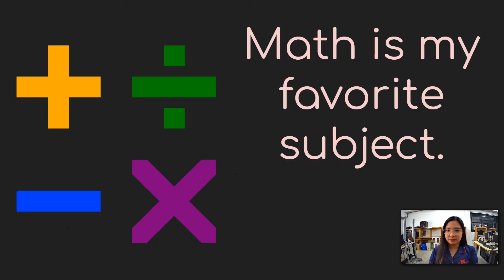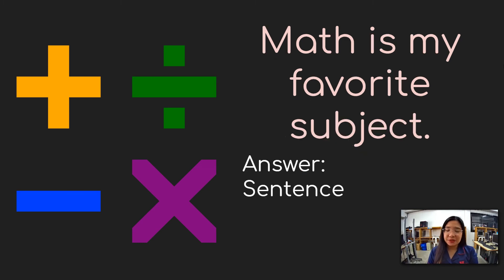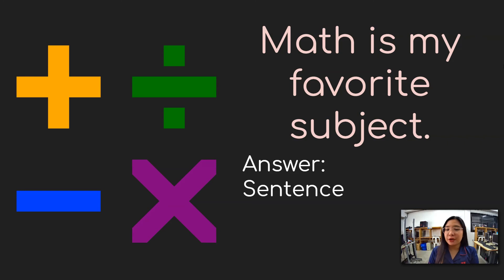Next. "Math is my favorite subject." Is this one a sentence or a non-sentence? Yes, you are right. This one is an example of a sentence because it has a complete thought. It starts with a capital letter, and it ends with a punctuation mark — and for this one, it is a period.